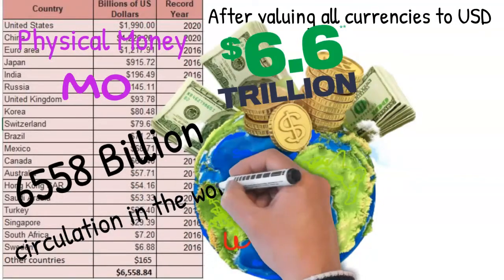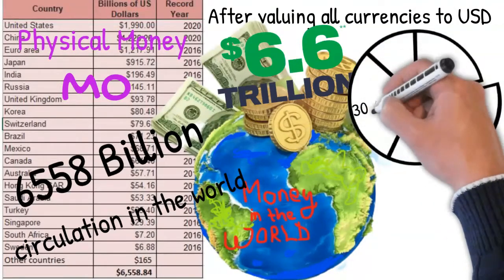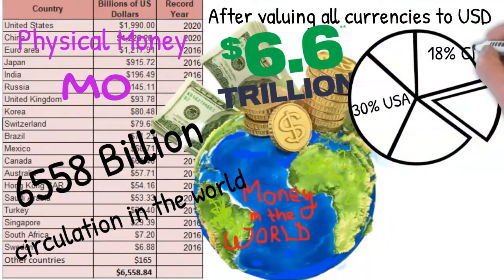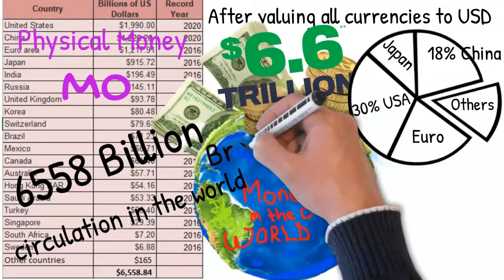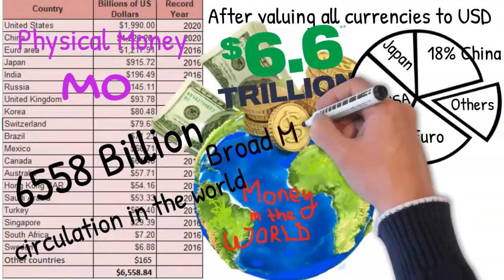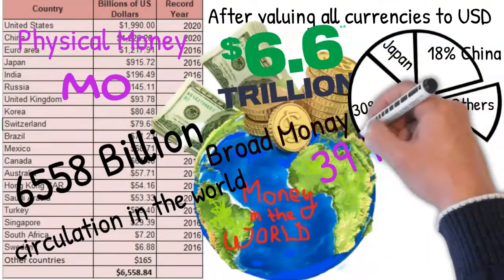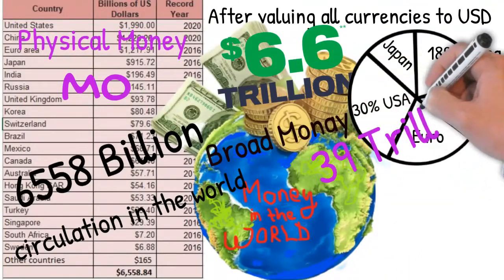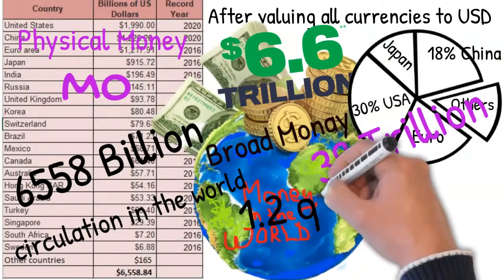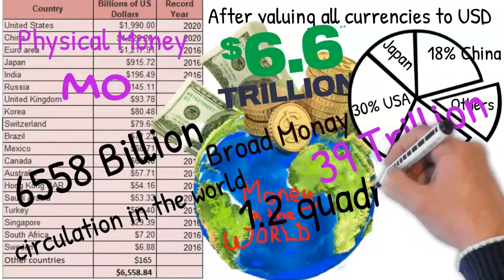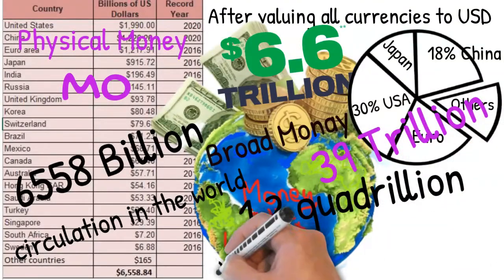Among all countries, the US has the most money, followed by China and Europe. But if we include other forms of money such as bank deposits and other checkable deposits, the amount approaches more than 39 trillion. And if we further include mutual fund investments, securities, derivatives, and more recent forms like cryptocurrencies, then the amount is expected to exceed 1.2 quadrillion.